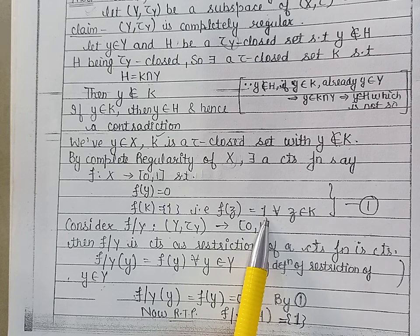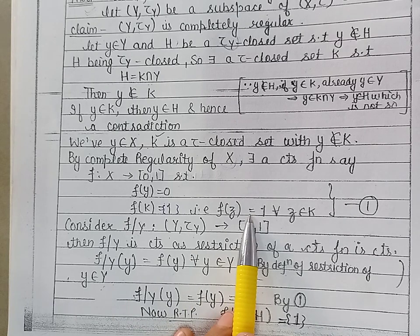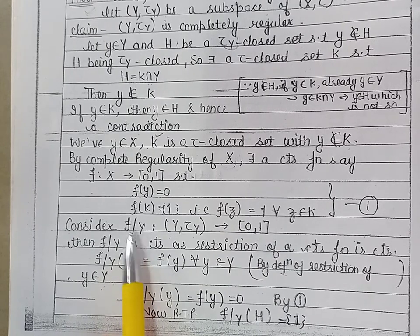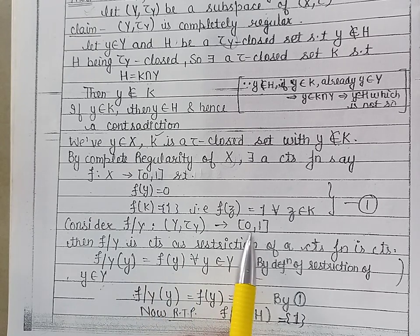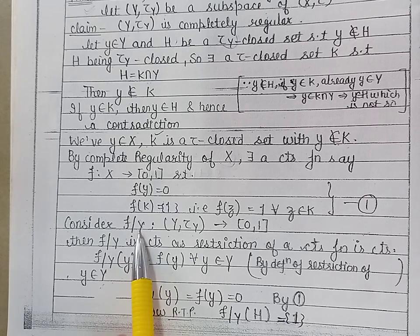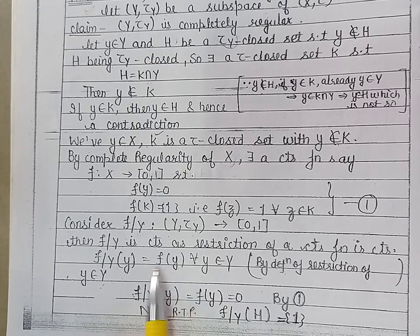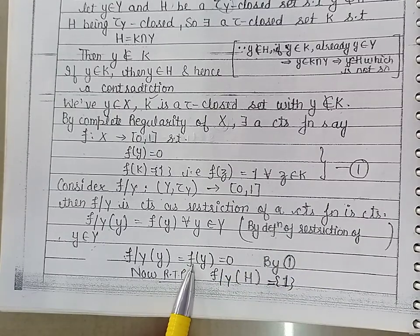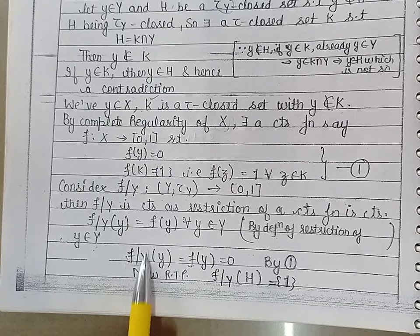We require a mapping on Y which is continuous and under which the image of y is 0 and the image of H is singleton {1}. So let us take the restriction of F to the set Y, defined from Y into [0,1]. The restriction of a continuous function is again continuous, and by definition of restriction, the image of y under the restricted mapping is the same as under F, which is 0.